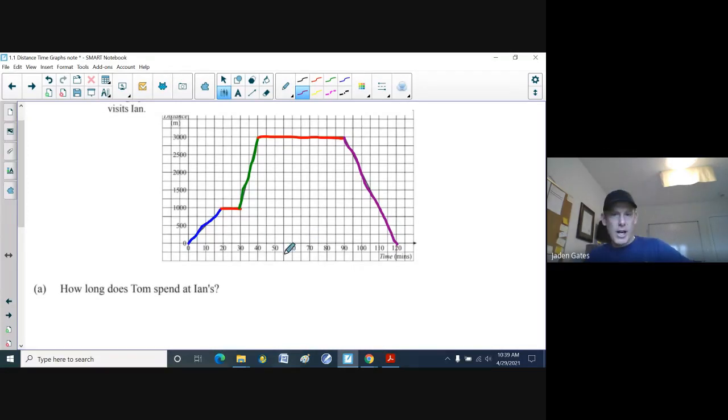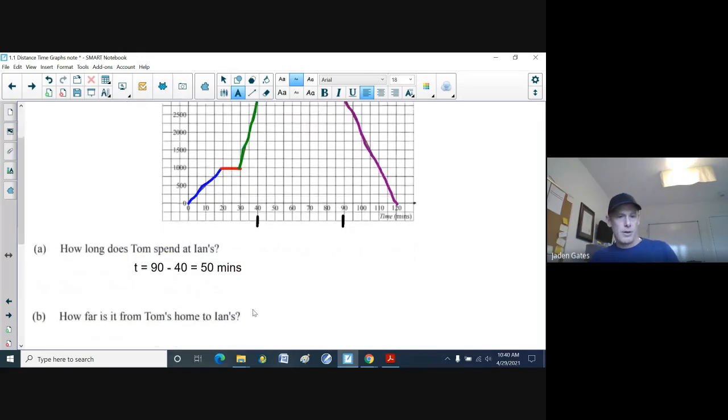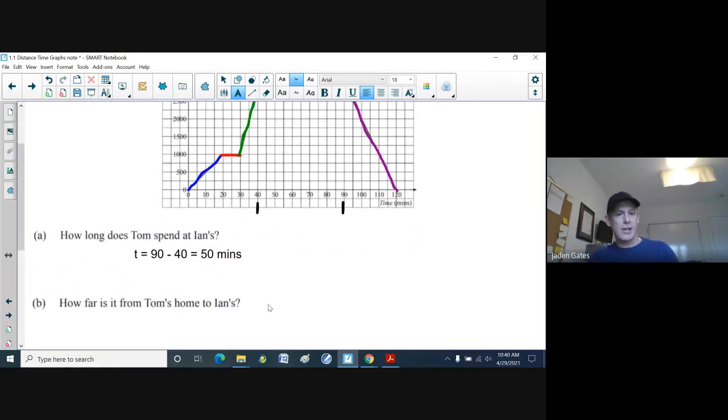So how long does he actually spend at Ian's? Well, the part that we're looking at that defines when he's at Ian's, I imagine this isn't it here, the first red line. But the second red line, so there's the start when he reaches Ian's house. And there's the end. And so if I want to look at the time here that he spent at Ian's house, so he left at the 90-minute mark, and he got there at the 40-minute mark. So the time that he spent at Ian's is T equals 90 minus 40, which would give us 50. And our time is in minutes.